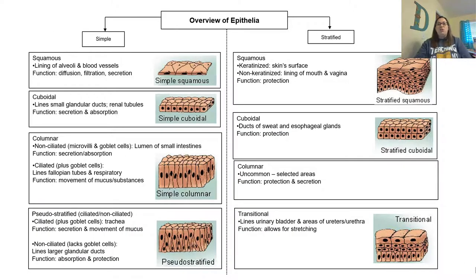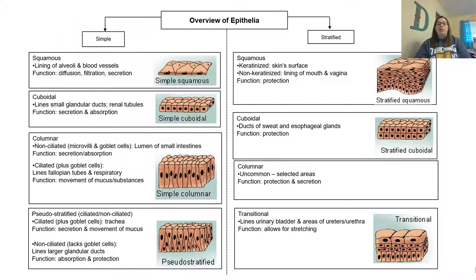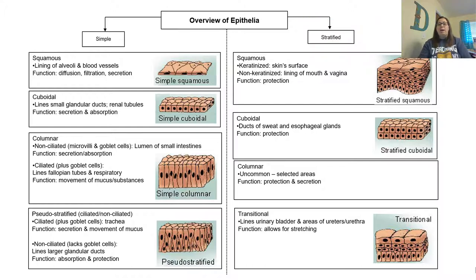Here's an overview chart of epithelial tissue. On one side we have simple — simple squamous, simple cuboidal, simple columnar, and pseudo-stratified, because pseudo means it's fake and does not have fully two or more layers, so it falls into the simple category. On the other hand, we have stratified squamous, stratified cuboidal, stratified columnar, and transitional. Pay attention in the notes to where these are located, because location will help you understand function — for example, a single layer of flat cells makes sense for diffusion in blood vessels.